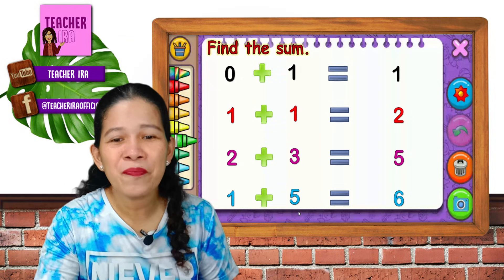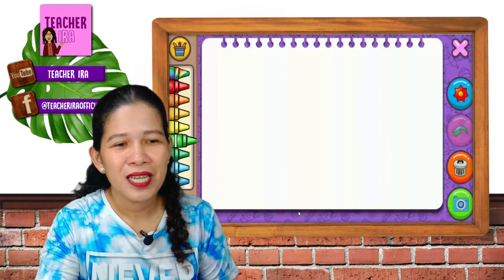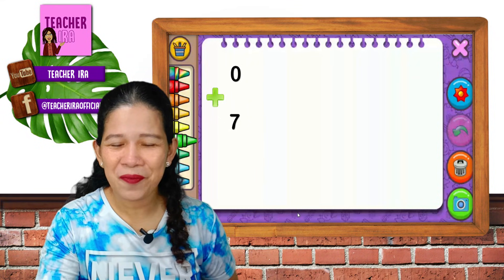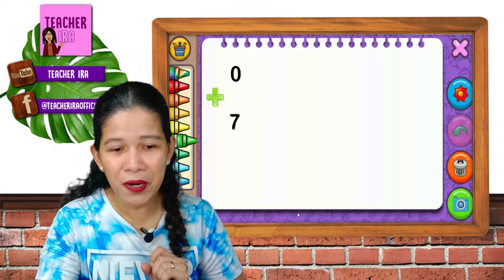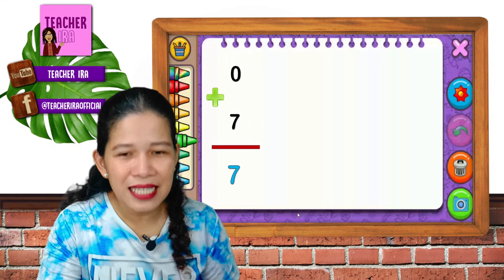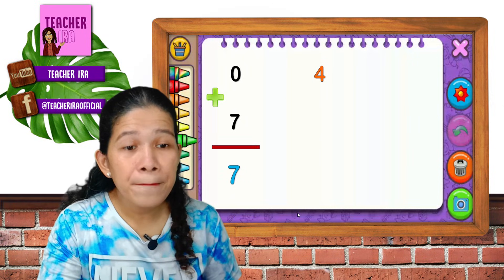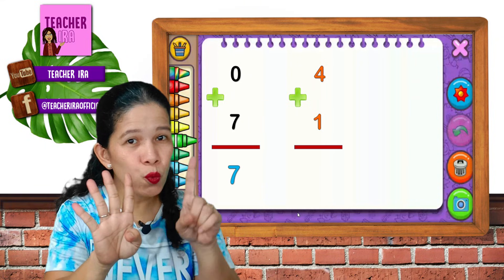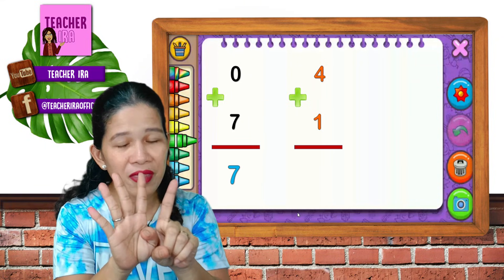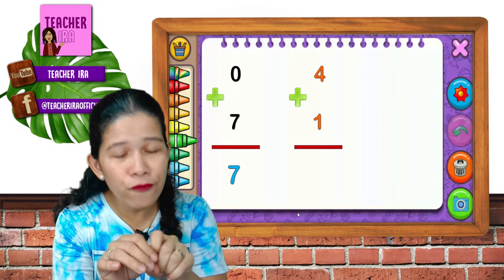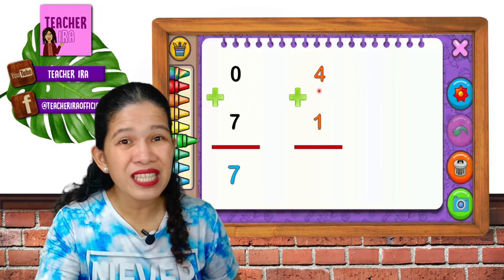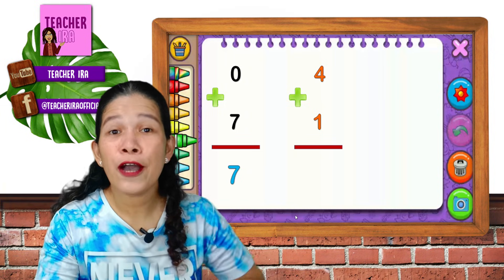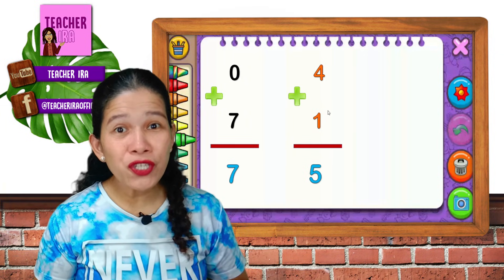Great, children. This is the last one: zero plus seven. Remember the rule — if we have zero as one of the addends, you don't have to count anymore. The answer is seven. Now let's have four plus one equals. We have four plus one — put them together and count: one, two, three, four, five. Or count on from four — what's next? That's five. The answer is five.